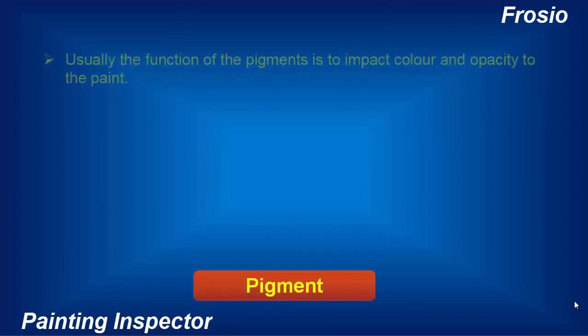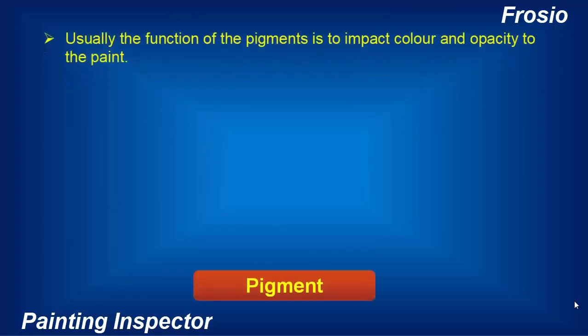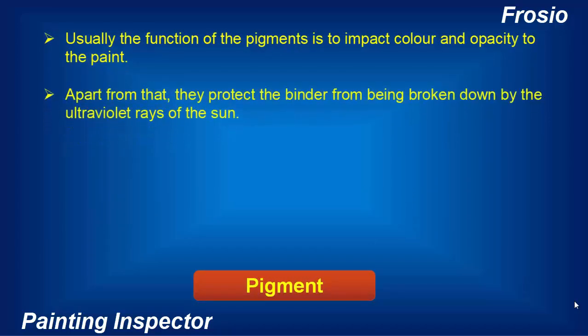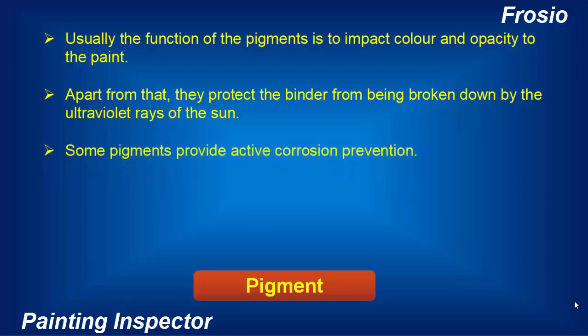Pigments. Usually the function of the pigments is to impart color and opacity to the paint. Apart from that they protect the binder from being broken down by the ultraviolet rays of the sun. Some pigments provide active corrosion prevention.